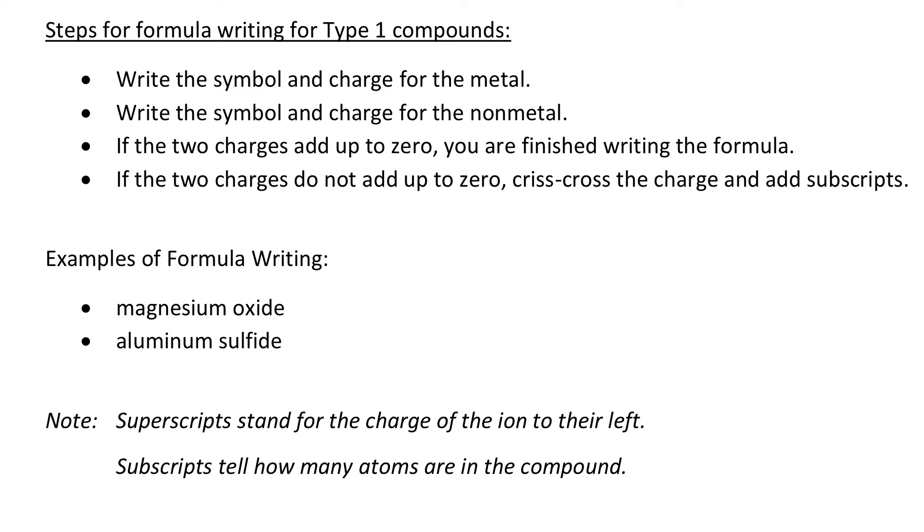So the very first thing that we do when we're looking at these steps for formula writing is to first write the symbol and charge for the metal. After we've done that we can write the symbol and charge for the non-metal. And once we have the charges, if those two charges add up to zero, then you're done writing the formula.